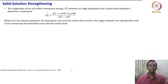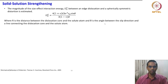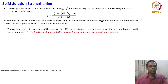You have to recall the concepts we have learned earlier. If you look at the dislocation dynamics or motion, we have seen that the dislocation core has to be at an angle with respect to other objects, whether it could be a solute or another dislocation — the orientation is important. That is why it is directly related to theta and inversely related to R. The parameter epsilon_B is a measure of relative size difference between the solute and solvent atoms. For example, in a binary alloy, it can be estimated as the fractional change in the lattice parameter per unit concentration of solute atom.